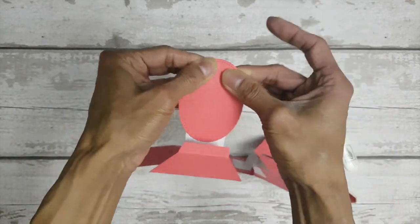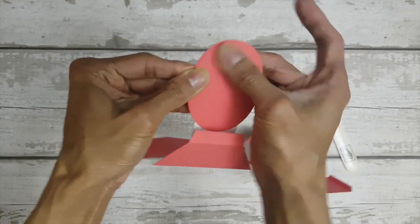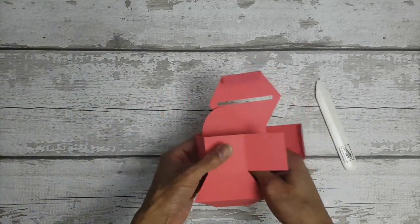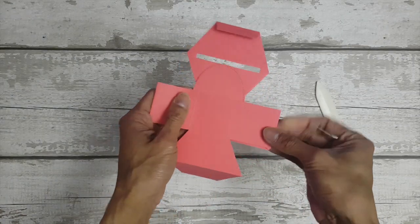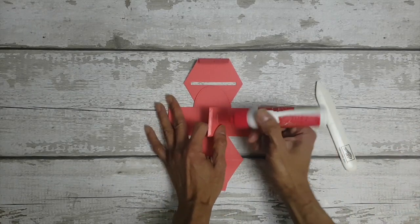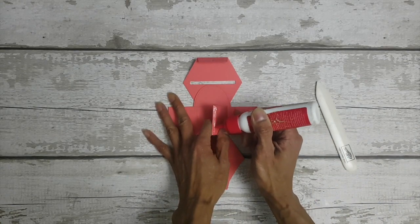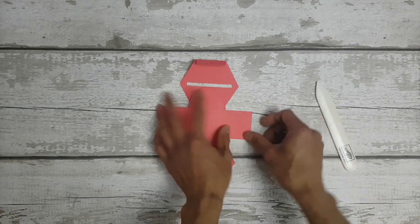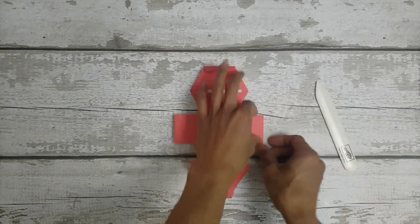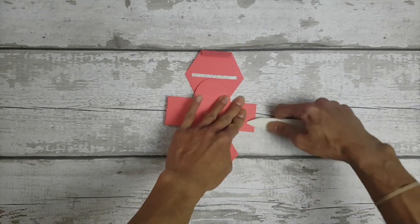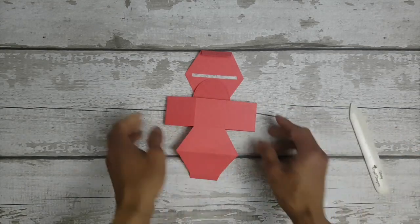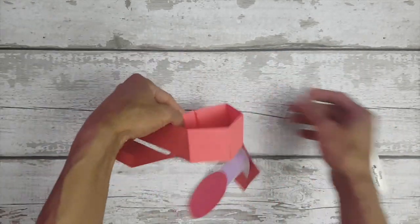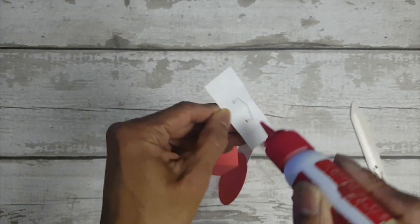And just make sure that the ovals are in line with each other and the glue is spread out. So now we can finish constructing the side panels just by gluing those two tabs on the right hand side.